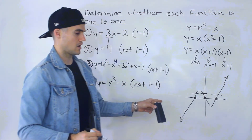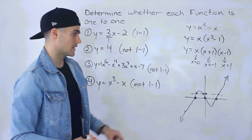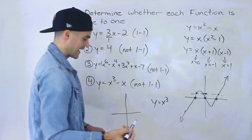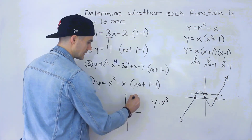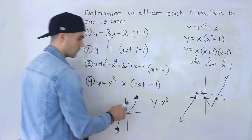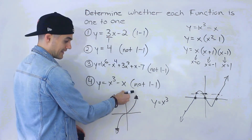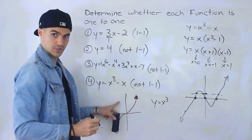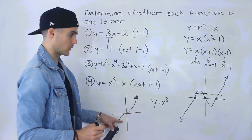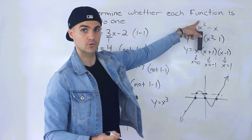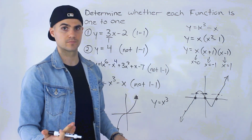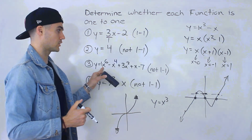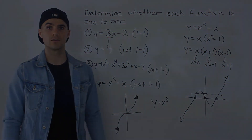That's an example of an odd degree polynomial that is not one-to-one. But recall from the overview video that y equals x cubed by itself is one-to-one because it passes the horizontal line test. So x cubed is an odd degree polynomial that is one-to-one, while x cubed minus x is an odd degree polynomial that is not one-to-one. Odd degree polynomials are tougher to assess, but even degree polynomials are always not one-to-one.